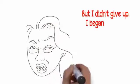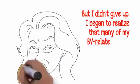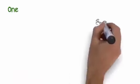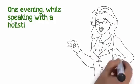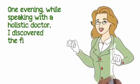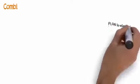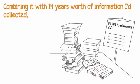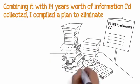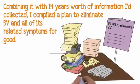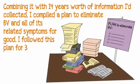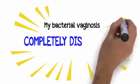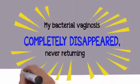But I didn't give up. I began to realize that many of my BV-related issues were coming from the same deep-rooted cause. One evening, while speaking with a holistic doctor, I discovered the final piece of the puzzle. Combining it with 14 years' worth of information I'd collected, I compiled a plan to eliminate BV for good. I followed this plan for three weeks, and finally my bacterial vaginosis completely disappeared, never returning again.